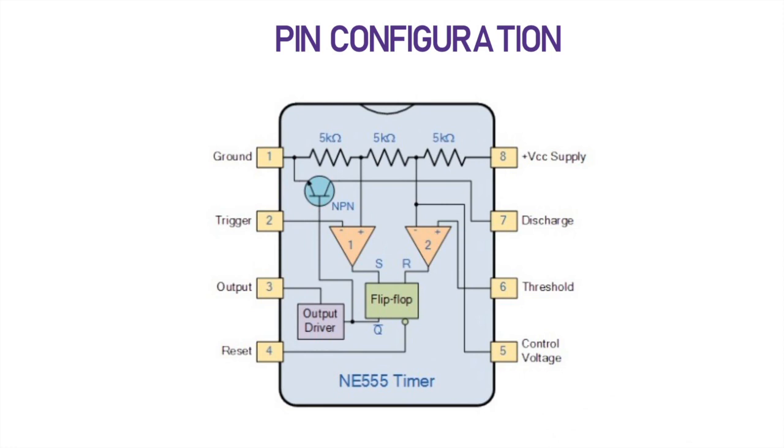The internal diagram consists of two comparators, latch, a discharge transistor and a buffer at the output. And the reason why this IC is called as stripper 5 timer IC is that the three 5 kilo ohms resistors are connected to form a voltage divider network.